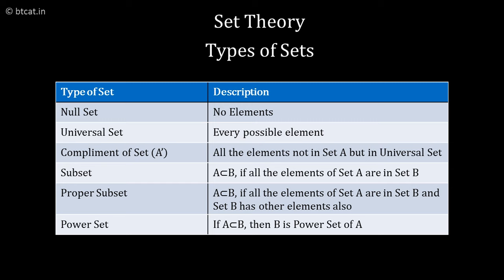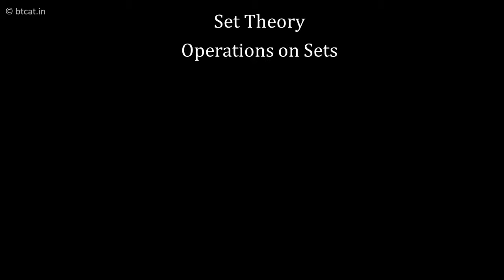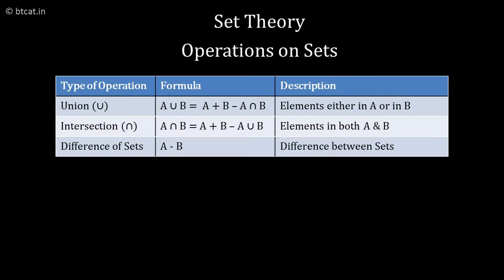Let us understand operations on sets. There are majorly three operations on which various types of application questions are there. The first is union of sets. A union B means the elements which are either in A or in B or in both. It is given as A plus B minus A intersection B. This is the heart backbone of set theory.